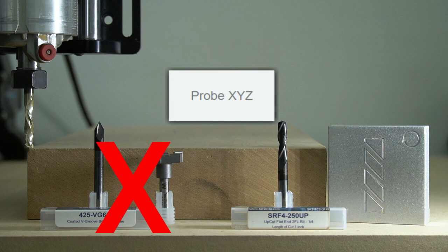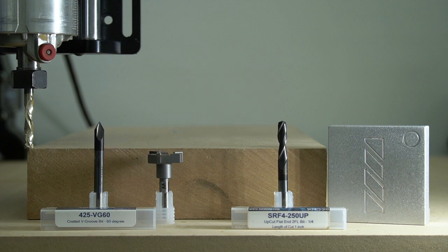On the right we have a quarter inch upcut bit with which we can probe X, Y, and Z because it is the same diameter from top to bottom.